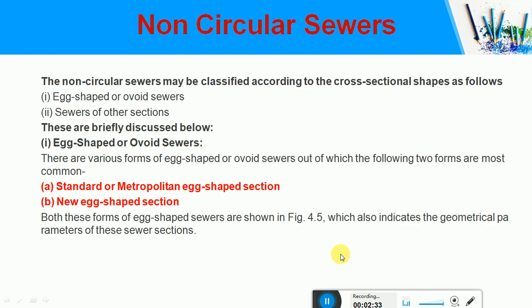Non-circular sewers are classified as egg-shaped, horseshoe type, rectangular, oval-shaped, and basket handle type sewers. These are used in combined sewer systems where under low flow conditions, the lower reduced cross-section maintains self-cleansing velocity, while the upper larger cross-section handles high flow conditions. A uniform section makes it difficult to maintain self-cleansing velocity during minimum flow.